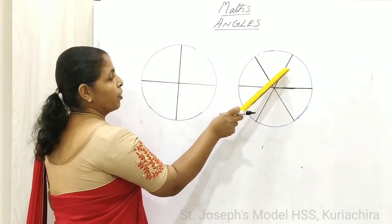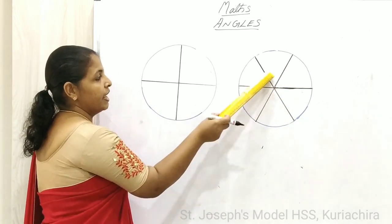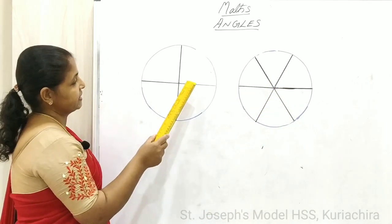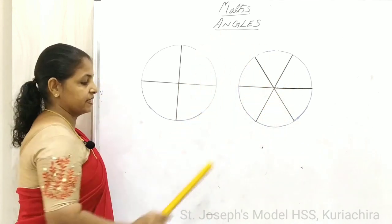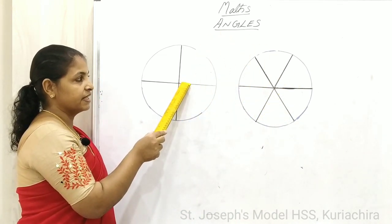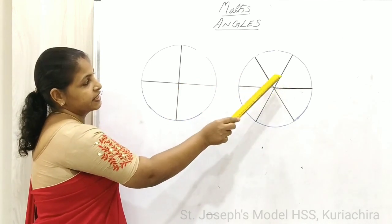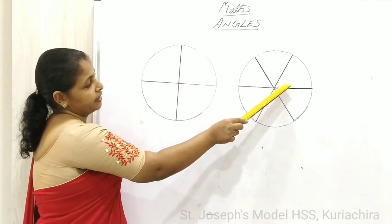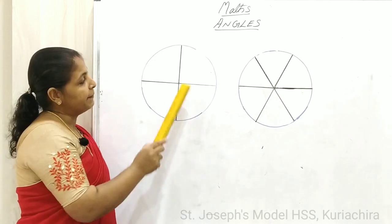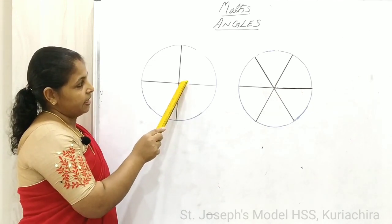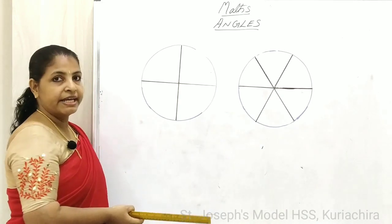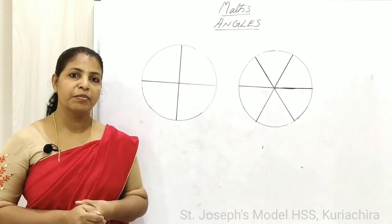An angle is formed in between these lines; similarly, angles are formed here also. Now let us take one part of each circle. The angle made at the center is larger in the circle with four parts than in the circle with six parts. So we can conclude: the angle made at the center increases as the number of parts decreases.